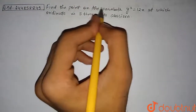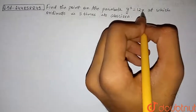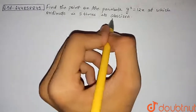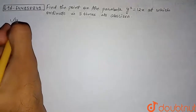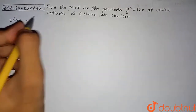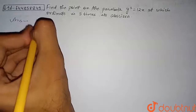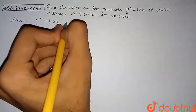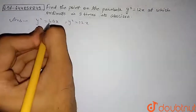Find the point on the parabola y² = 12x at which the ordinate is three times its abscissa. Let's begin with the solution. First, we will compare our given parabola equation with the standard parabola, which is y² = 4ax. Our given parabola is y² = 12x.